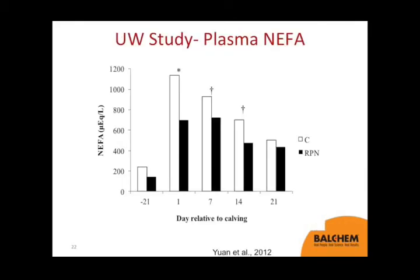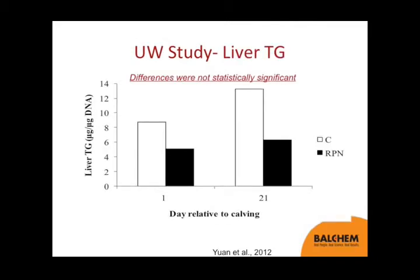Here's the NEFA concentration at 3 weeks prior to calving, then at 1, 7, 14, and 21 days after calving. If you can get niacin through the rumen and into the bloodstream, it's a pretty potent antilipolytic compound — you can see the reductions in blood NEFA. For liver triglyceride, cows were biopsied at 1 and 21 days after calving. Those fed the rumen-protected niacin had lower liver triglyceride — lower NEFA, lower liver triglyceride — although these differences were not statistically significant.